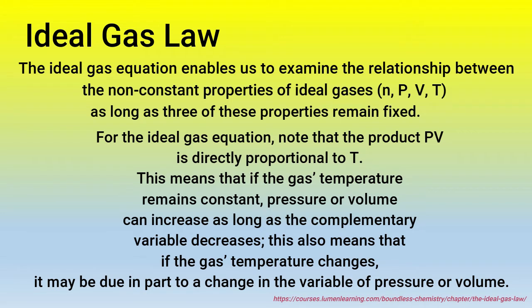The Ideal Gas Law enables us to examine the relationship between the non-constant properties of ideal gases: N, P, V, and T. As long as three of these properties remain fixed, note that the product PV is directly proportional to T. If temperature remains constant, pressure or volume can increase as long as the complementary variable decreases. If temperature changes, it may be due in part to a change in pressure or volume.